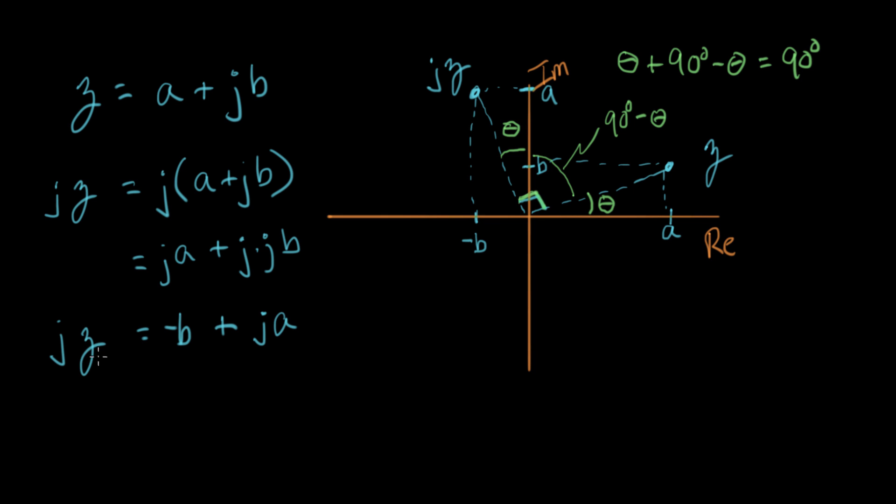That demonstrates that any complex number z, if I multiply it by j, that results in a positive rotation of 90 degrees.